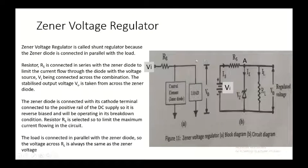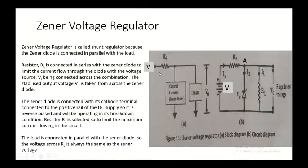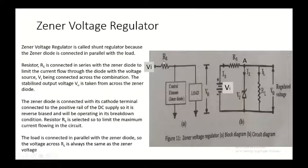Now we will go into detail about the Zener voltage regulator — its block diagram and circuit diagram. The Zener voltage regulator is also called a shunt regulator because the Zener diode is connected in parallel with the load. The input voltage is VI and we have a resistance RS connected in series. RS is connected to the Zener diode, which is the control element, and we have a load across which the output voltage VO is measured. The Zener voltage VZ will be your output voltage VO.